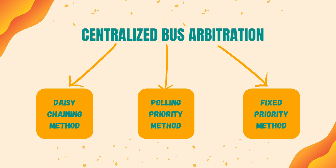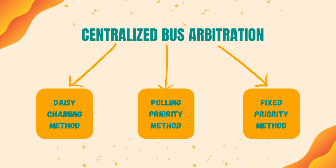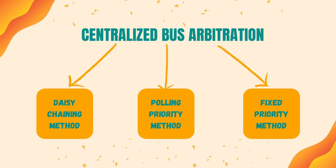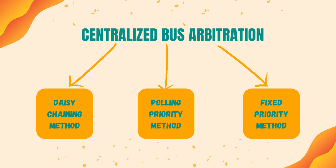There are three methods of centralized bus arbitration: the daisy chaining method, the polling priority method, and the fixed priority method.